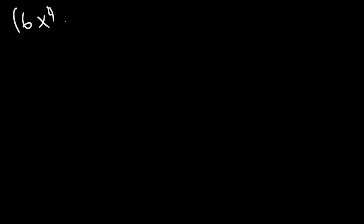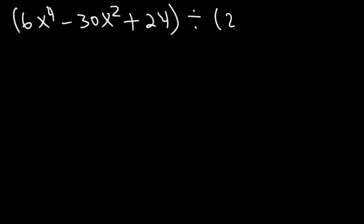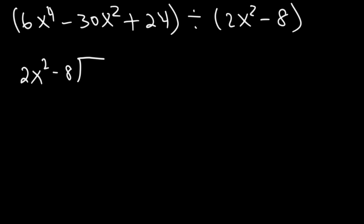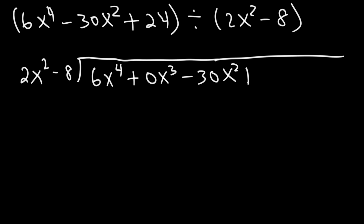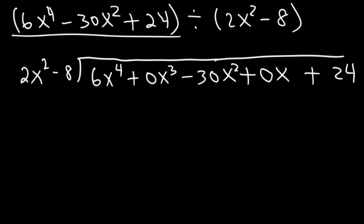Now let's move on to the next example, which is going to be a little different. We're going to put 2x squared minus 8 on the outside, and on the inside we have 6x to the fourth. Notice there's no x cubed term, but we need to write that. So we write plus 0x cubed and plus 0x and then plus 24. Anytime you have a polynomial where you're missing terms in between, make sure to put a 0 for the coefficient of those terms.